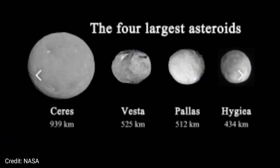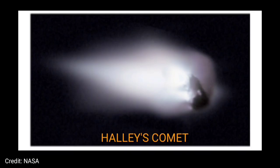These are examples of asteroids. The four largest asteroids are Ceres, Vesta, Pallas, and Hygieia. Halley's Comet is the most famous comet of the 20th century and the only known short-period comet. It takes 75 to 79 years for the comet to orbit the Sun. We see it in the sky every time it makes its nearest approach to the Sun.